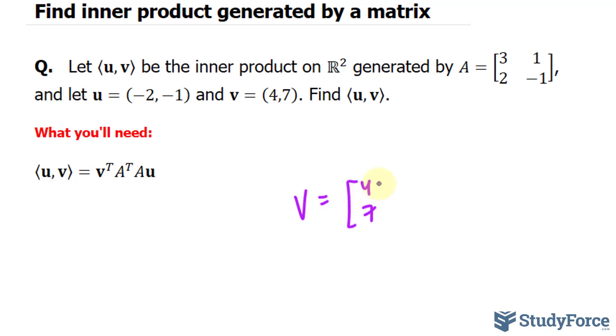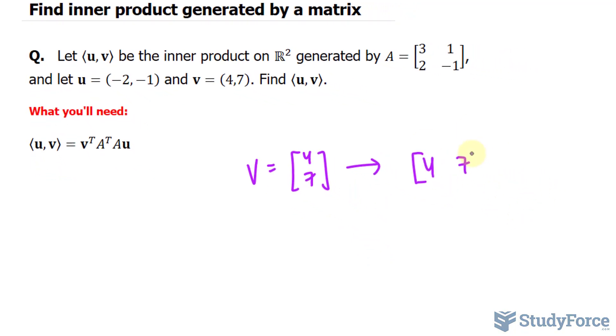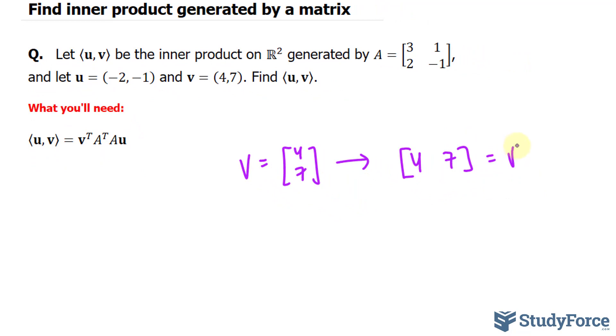So vector v is a column vector 4 and 7. If we take the transpose of this, we get the rows become the columns. So here we have a column, it becomes a row vector, 4 and 7. So this is equal to the transpose of v.